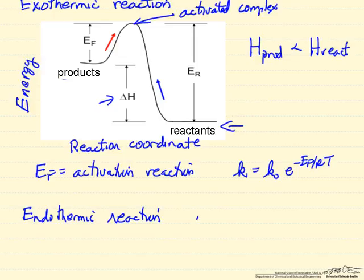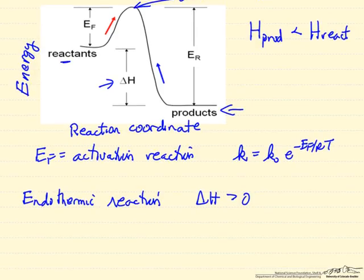So endothermic reaction, delta H is positive, and you can see in this diagram, it's a much bigger barrier than for the exothermic reaction. But both reactions follow the same pathway.